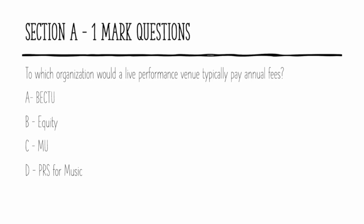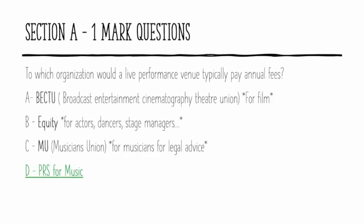The first question is: to which organisation would a live performance venue typically pay annual fees? The answer to that one is PRS for Music. PRS stands for Performing Rights Society. What the Performing Rights Society does is pay their artists royalties — which just means money — for their music being broadcast on TV or radio or being played in a public place. Live performance venues would be paying these royalties to the PRS, which in turn will pay them to their members.